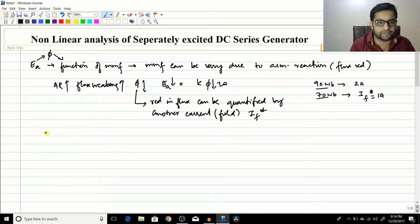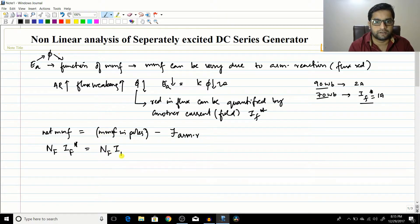Now you know that the net MMF will be equal to the MMF in the poles minus the MMF due to the armature reaction. So the net MMF will be due to this particular IF star. If the number of field winding is NF, so NF into IF star will be equal to MMF in the poles, actual MMF which you expect. So NF into IF star equals NF into IF minus armature reaction.